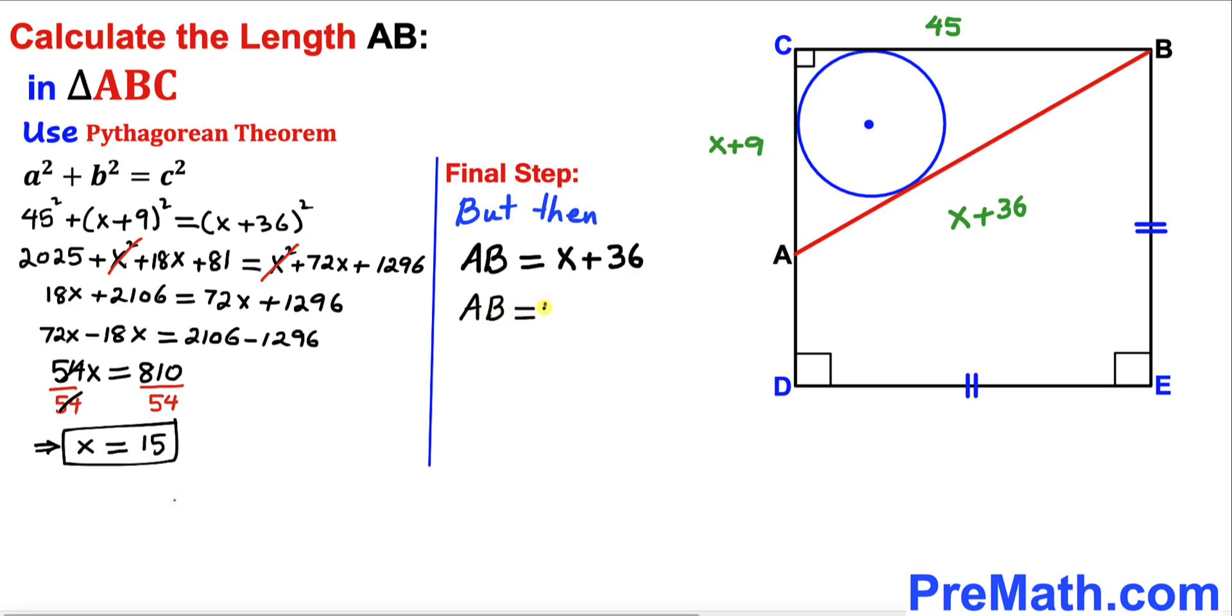Our AB length turns out to be 51 units. Thus our AB length is 51 units.